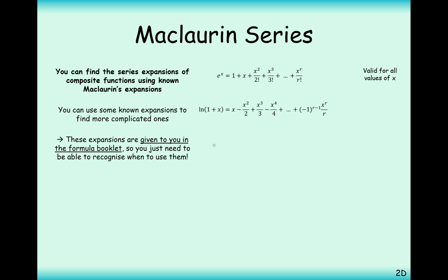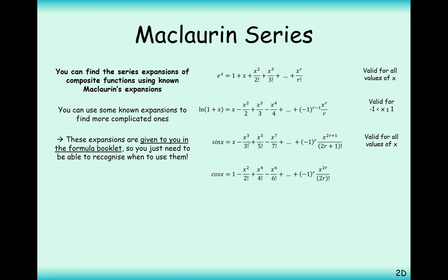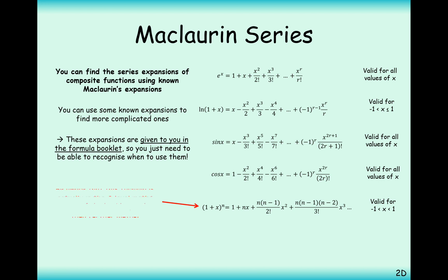We have ln(1+x), which was worked out previously. Sine x — Maclaurin worked that out himself in the last video. Cos x is the complementary one to sine, using even powers rather than the odd powers. And then we have (1+x) to the n, which is actually the binomial expansion formula from the A-Level part of the formula booklet rather than the further maths section. So don't forget that you do have the binomial expansion available to you as well as any of these Maclaurin series formulae.